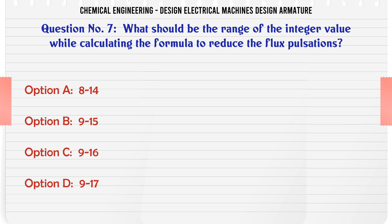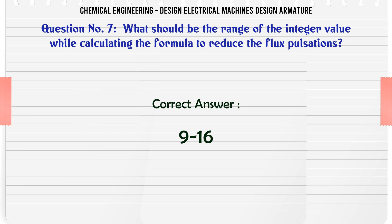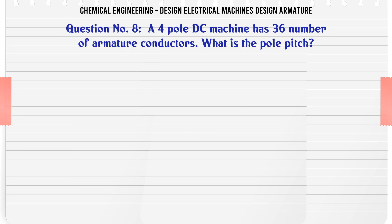What should be the range of the integer value while calculating the formula to reduce flux pulsations? Options: a) 8–14, b) 9–15, c) 9–16, d) 9–17. The correct answer is 9–16.